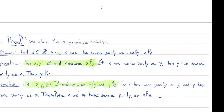Just to color-code: the green stuff is what we start with in each of these proofs, and the pink stuff is what we want to show in each case. It's mostly going to be the same in all situations — just the letter might be R instead of P, the set might be R instead of Z, or we might have a slightly different notation.